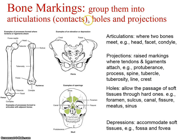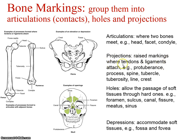Bone markings are basically vocabulary. We group them into articulations, holes, and projections. Articulations are where two bones meet — examples include the head of the femur or humerus fitting into cavities like the acetabulum or glenoid cavity. Facets are flat articulations; condyles are rounded. Projections are often where tendons and ligaments attach — examples include processes, spines, and tubercles. Holes allow the passage of soft tissue; the big one is the foramen. We also have meatus and sinuses.